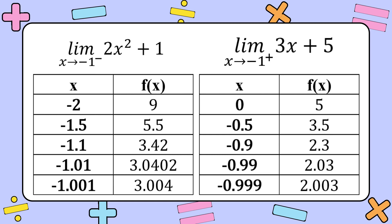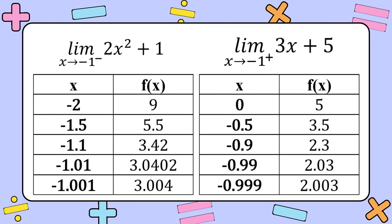We must find the right-hand and left-hand limits. The limit of 2x squared plus 1 as x approaches negative 1 from the left, from the table, approaches 3. So the left-hand limit equals 3. For the right-hand limit, the limit of 3x plus 5 as x approaches negative 1 from the right, from the table, f of x approaches positive 2. So the right-hand limit equals positive 2.